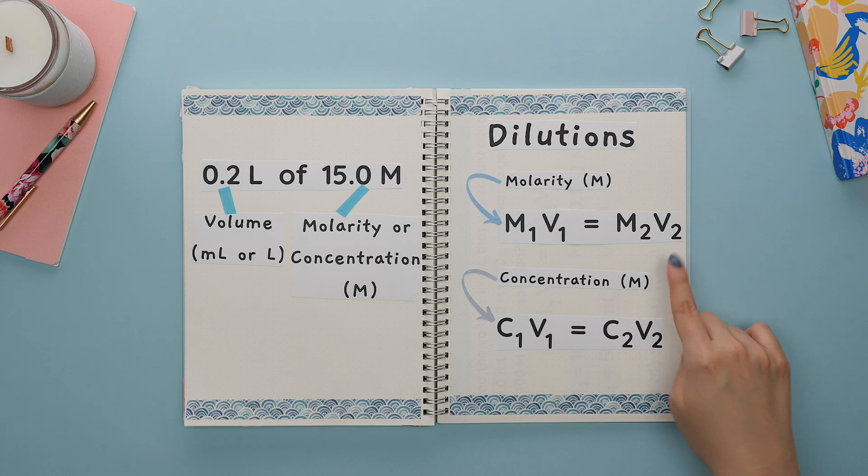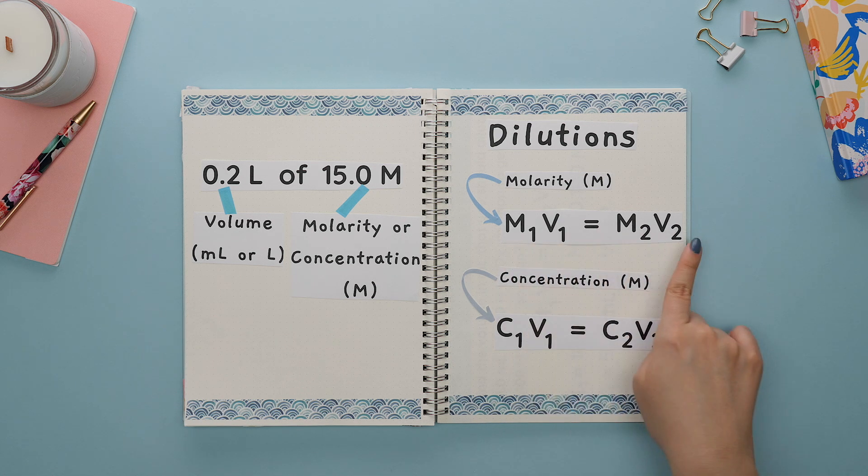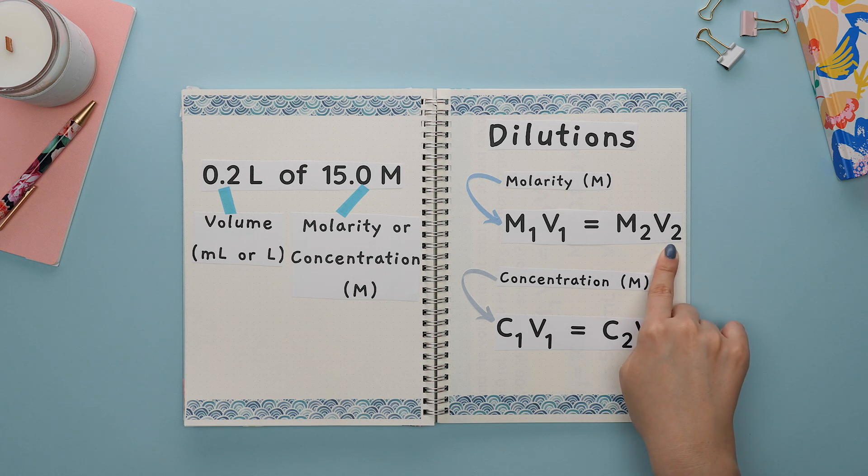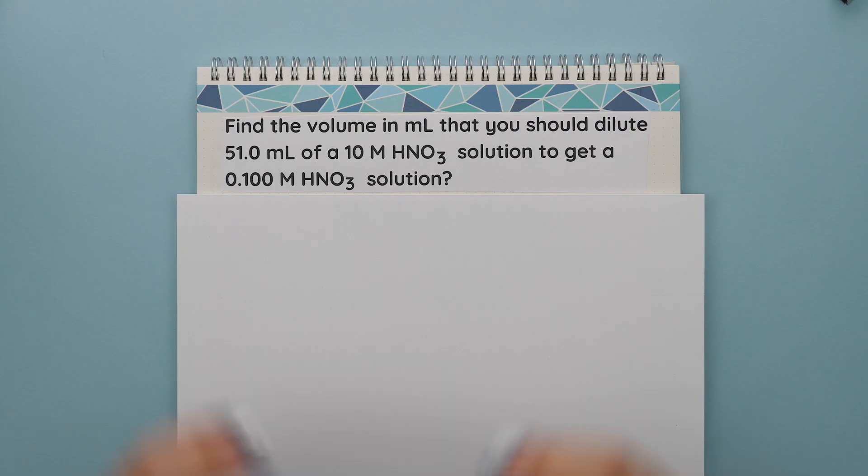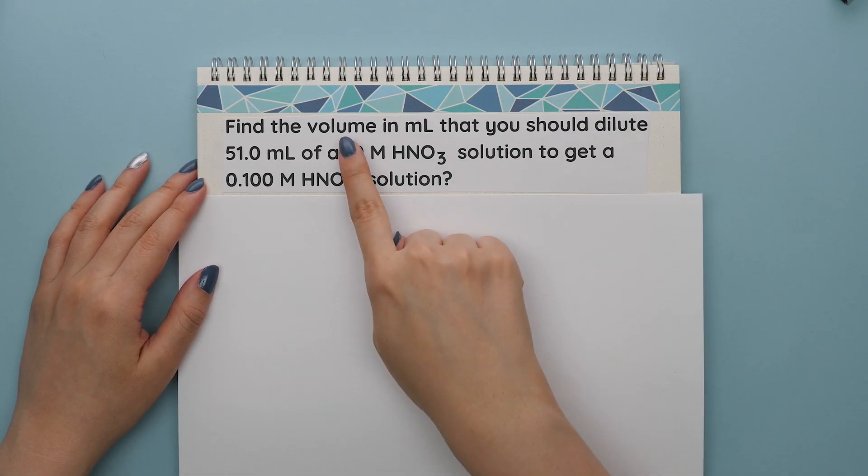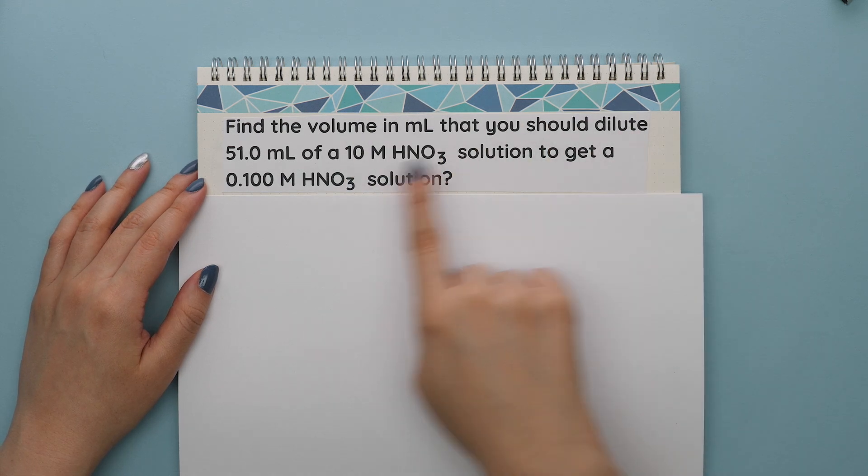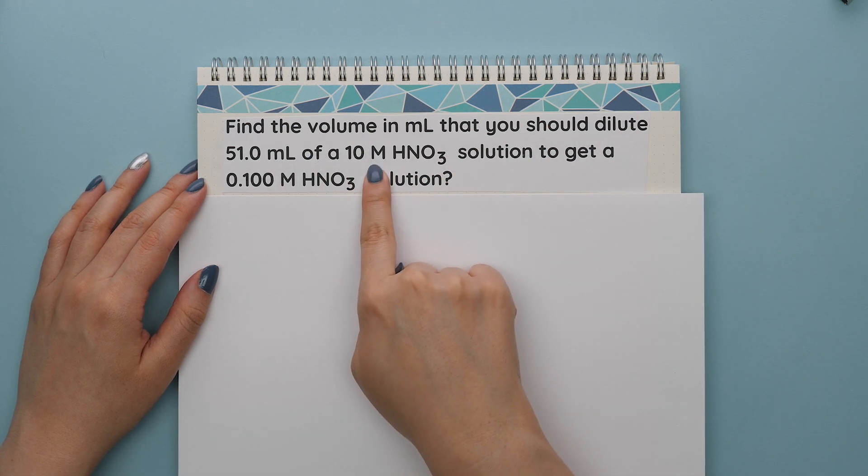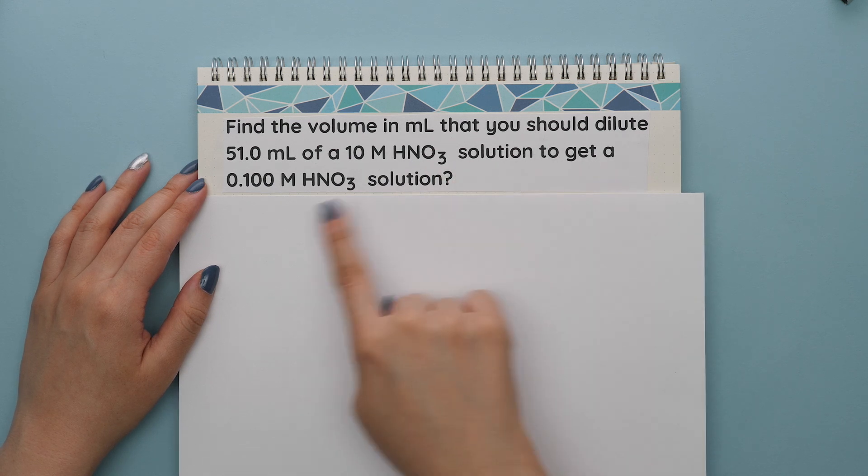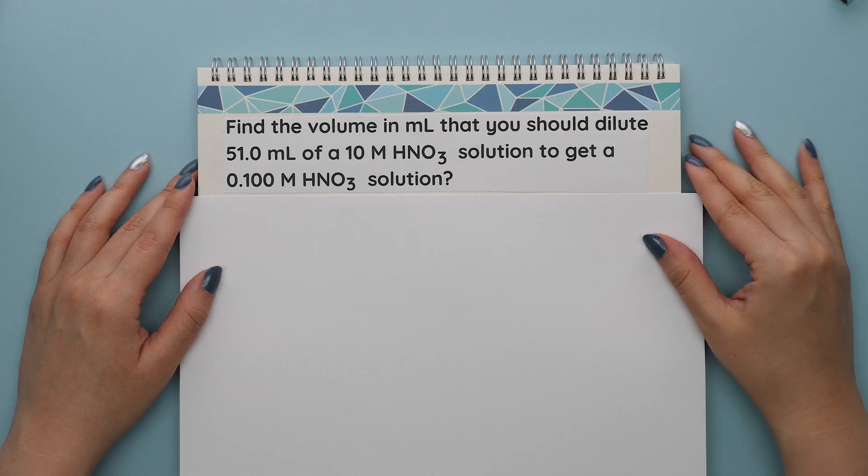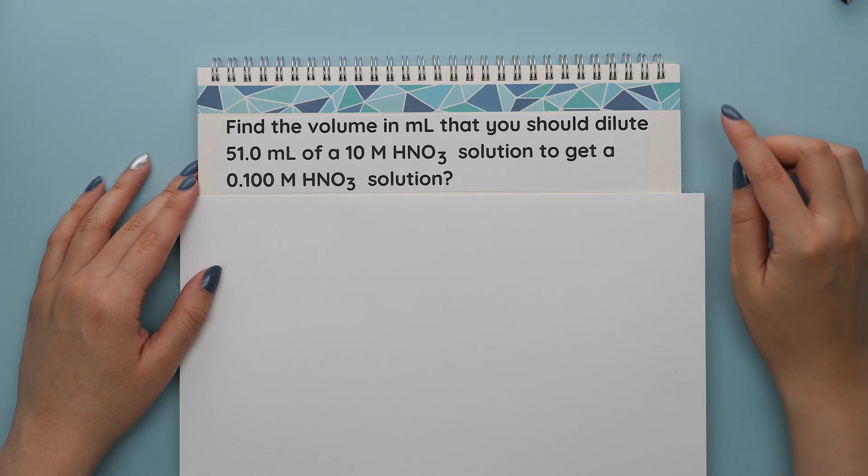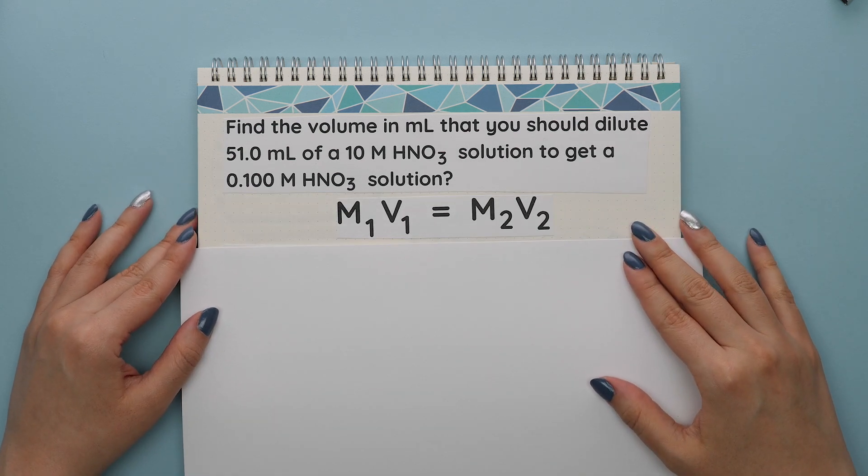Sometimes you might not be sure what value in the word problem is M1 or V2. And if you label anything incorrectly, you could get the answer wrong. For these next examples, I will be showing you how to figure out how to label what you are given. I won't be solving the question. Let's say you were asked to find the volume in milliliters that you should dilute 51 milliliters of a 10 molar nitric acid solution to get a 0.1 molar nitric acid solution. First of all, we know this is a dilution question because our keyword is dilute. So we will be using this formula.